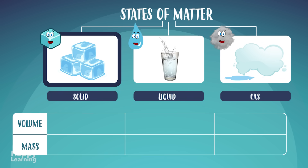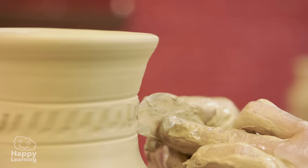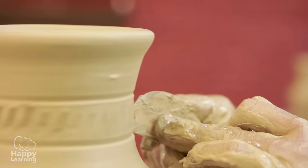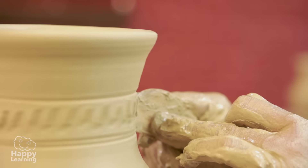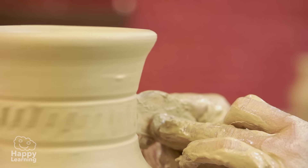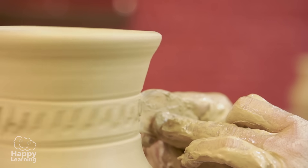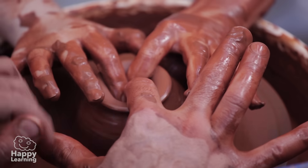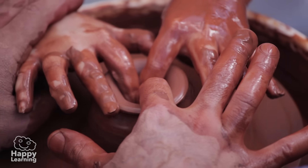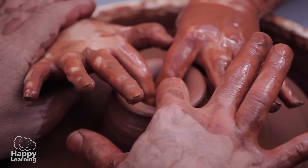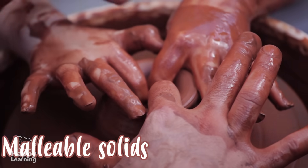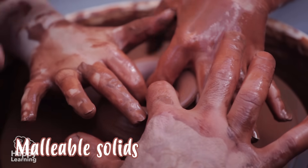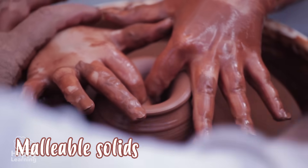Solid state is characterized by having a fixed volume and size. Although in some cases we can change its size, like with plasticine or clay. In these cases, they are malleable solids!